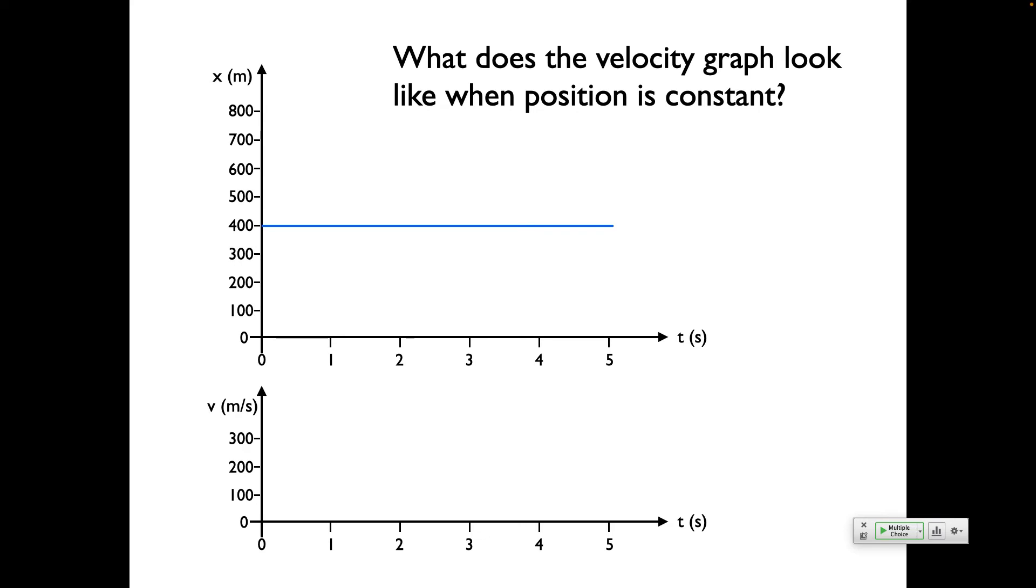So just a question. What does the velocity graph look like when the position graph is constant? It's also a line. But where is it? Zero. Zero, right? So if you're not moving, what's your velocity? Yeah, nothing. So what are you doing here? If this was you, where are you standing? 400 meters. 400 meters, right? On whatever this coordinate system is used. You're 400 meters away from something.